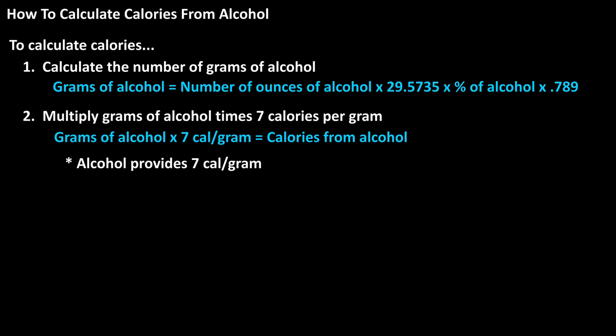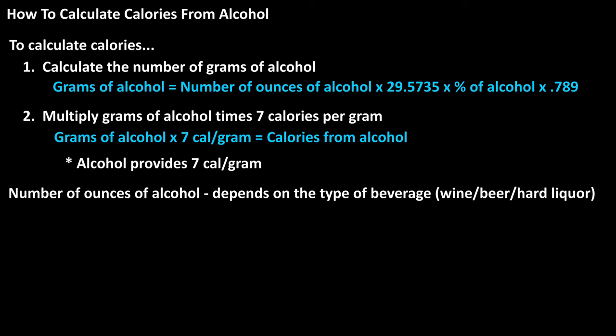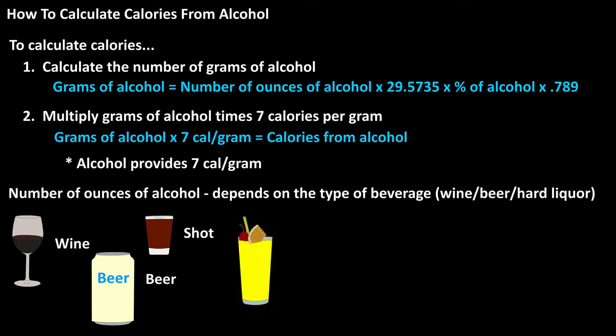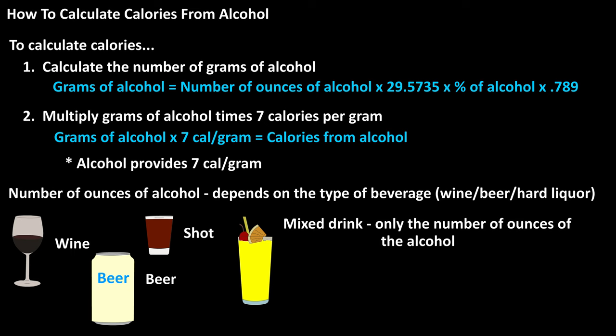In the formula, the number of ounces is dependent on the type of alcoholic beverage — for instance, a 12-ounce can of beer, a 6-ounce glass of wine, or a 1.5-ounce shot of vodka or whiskey. One note: in a mixed drink, say a vodka and lemonade, this formula is only for the number of ounces of the alcohol — the vodka. So if the mixed drink has only one ounce of alcohol, you would use one in the formula.